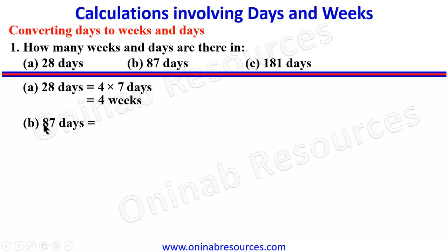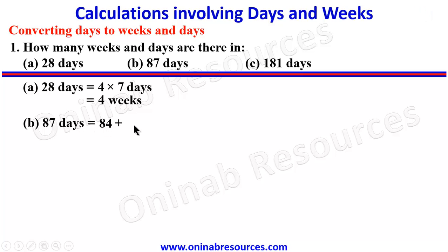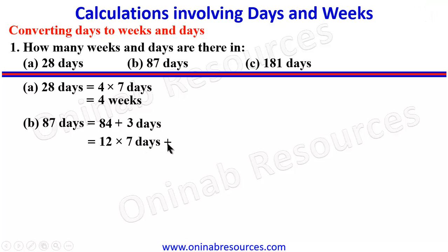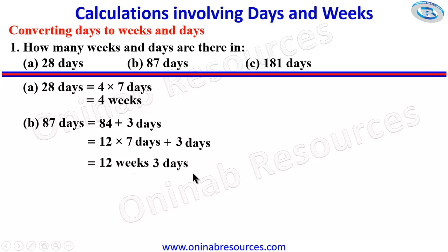For B, we have 87 days. We look at what multiple of 7 we can get from 87 — that is 84. Then we add 3 to make it 87. So we have 84 plus 3 days. This 84 is 12 times 7. So we have 12 times 7 plus 3 days, which means we have 12 weeks and 3 days in 87 days, since 12 times 7 gives 84 plus 3 giving the 87 days.